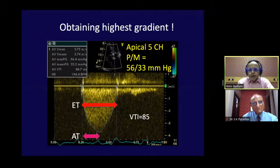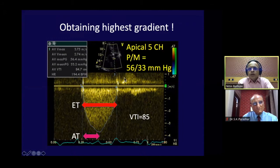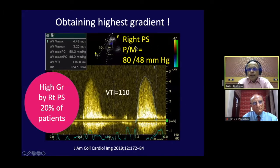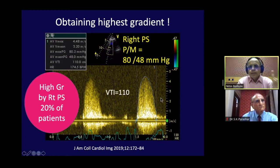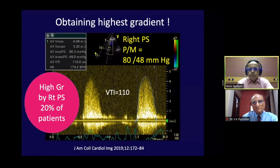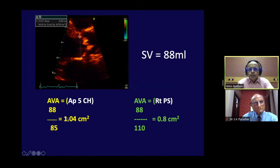Once you get the CW envelope across the aortic valve, measure the ejection time (ET), acceleration time (AT), and the AT/ET ratio. For example, from a five-chamber view we may get a peak systolic gradient of 56 and mean of 33, but from the right parasternal view the gradient jumps to 80/48. Remember, 20 percent of patients get a higher gradient through the right parasternal window. Explore all possible windows — five-chamber, right parasternal, subcostal, and suprasternal — to get the maximum gradient. The same patient could have valve area of 1.0 from five-chamber view versus 0.8 from right parasternal.